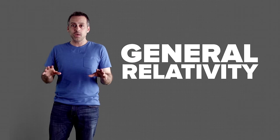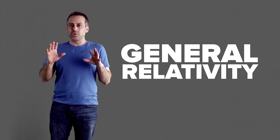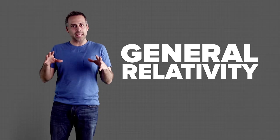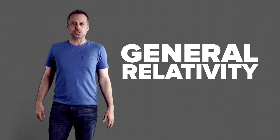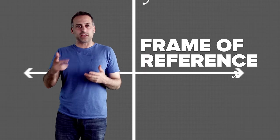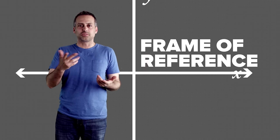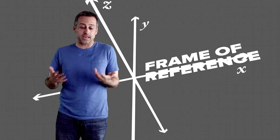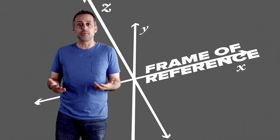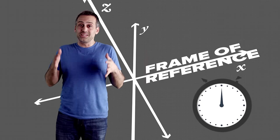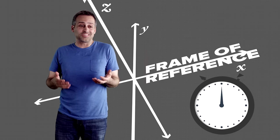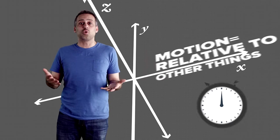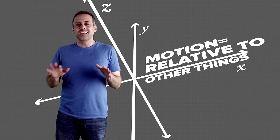Bear with me for a minute, because we need to begin with some Physics 101 and Newton's laws of motion. To analyze motion, you need what's called a frame of reference — just some X, Y, Z axes to label points in space and a clock to track time. The reason you need a frame of reference is that you can only measure motion relative to other things.